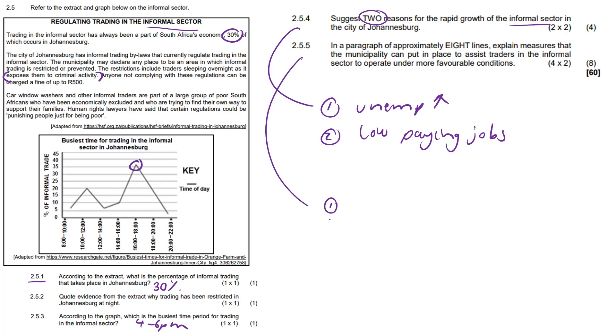And 2.5.5. In a paragraph of approximately eight lines. Eight lines. So these eight liners, we have to give four distinct and succinct points and we'll explain them as well. So let me just go all the way.